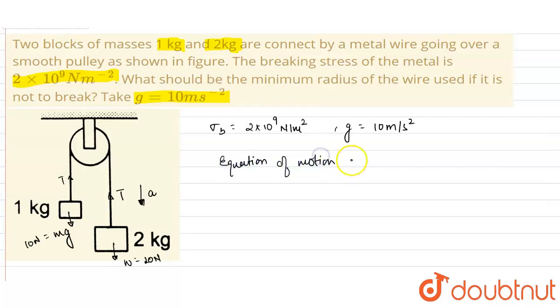For the first mass of 1 kg, the tension will be T minus 10. As the block 2 of mass 2 kg is going downward, it will go upwards with the same acceleration a. So T minus 10 = 1 × a. Let us suppose this is equation number 1.